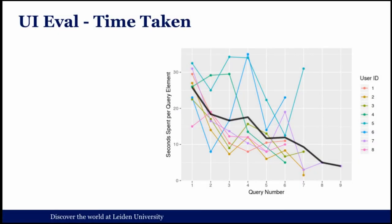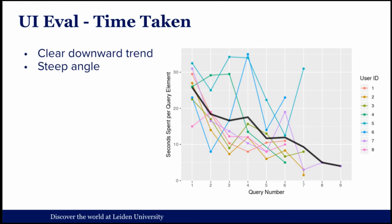Some results from that study: this graph shows the time taken per query element — to normalize for the difference between very long and short queries — plotted over the number of queries performed. The colored lines are the different users and the black line is the mean. We can see that on average there's a clear downward trend at a fairly steep angle, which indicates the system is fairly easy to learn.